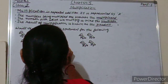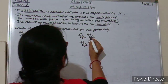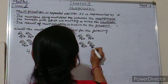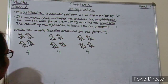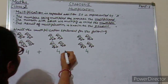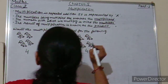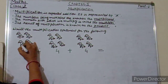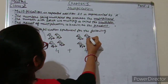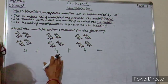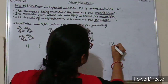Again: 1, 2, 3, 4. And now: 1, 2, 3, 4. So we have to add these birds: 4 plus 4 plus 4 is equals to — start counting: 1, 2, 3, 4, 5, 6, 7, 8, 9, 10, 11, 12. So 4 plus 4 plus 4 plus 4 is equals to 12.